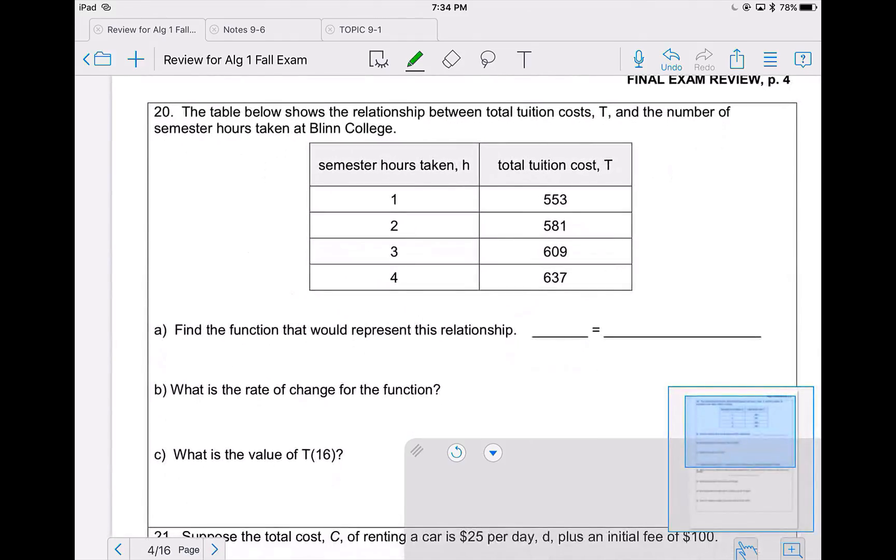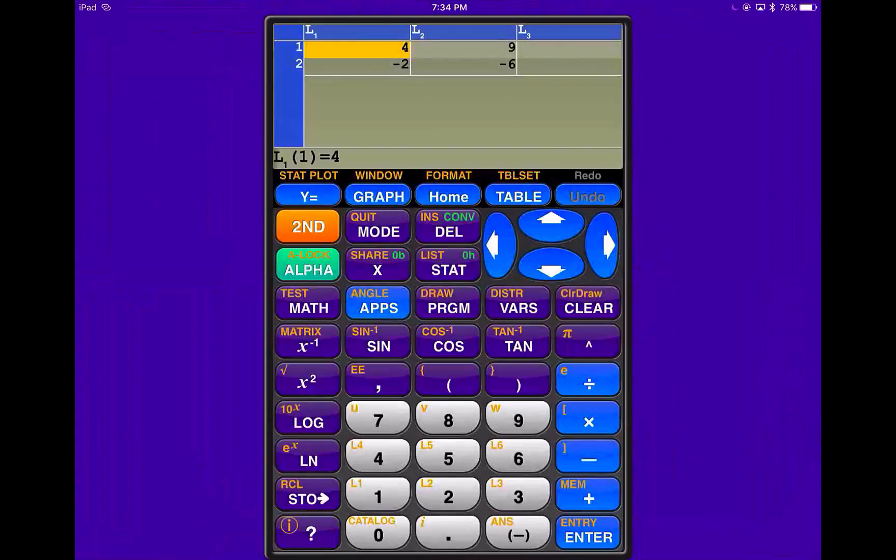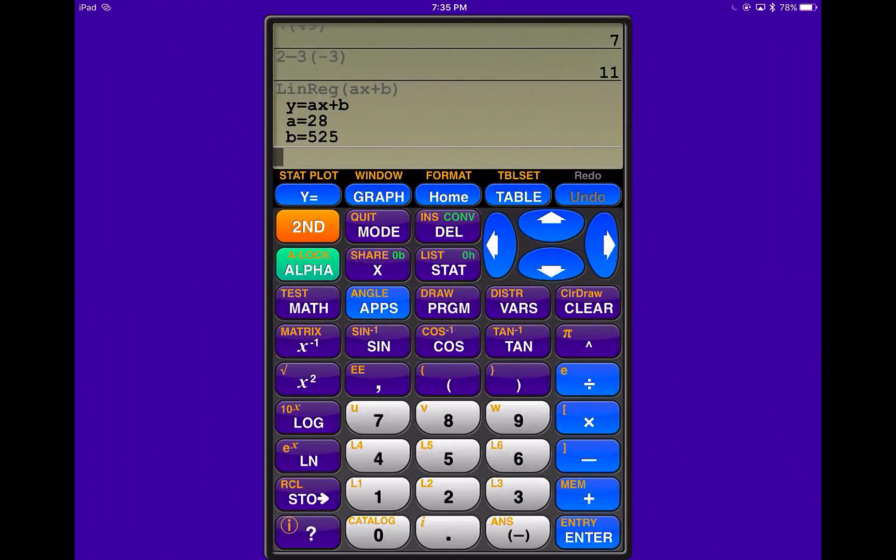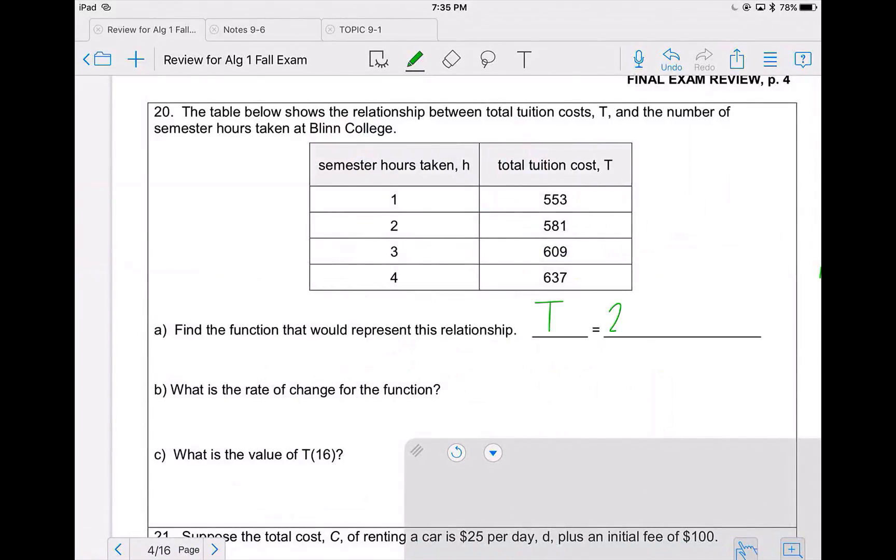Problem 20 tells us that the table below shows the total tuition cost T and the number of semester hours taken at blend for H. And then they ask us to write a function that would represent the relationship. So what I'm going to do is put this exactly like I see it into stat edit. Because anytime I have a table or two or more points, I can use stat edit. So in my calculator, I click stat edit or enter. I input this exactly like I see it. So my x's are 1, 2, 3, and 4. My y's are 553, 581, 609, and 637. So I make sure that my calculator in my table looks exactly like the table on my paper. From here, we click stat, calc, 4, enter as many times as it takes. And we have 28 for our slope and 525 for our starting. So to write this, our tuition cost is 28 times H plus 525. Notice that they did not use x and y, they used H and T.